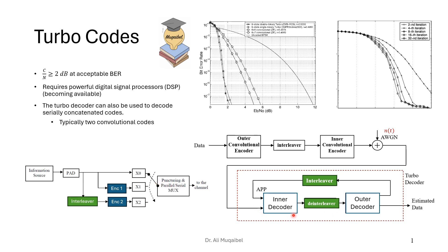We're not going into full details, just showing the basic structure. It's made of two convolutional encoders, and the beauty is that the more iterations we have, the better the estimation, because every process seems to be independent of the other due to the interleaving — as if we are decoding again. Regarding carrier-to-noise ratio, even close to 2 dB Eb/N0, we can still maintain a very low bit error rate.